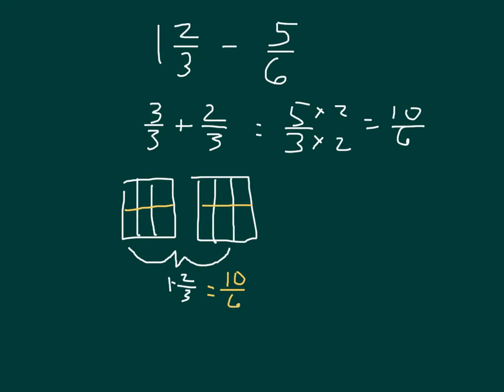So if we're subtracting 5 sixths from there, we'll go to our model first. And so we subtract 1, 2, 3, 4, and 5 sixths. That leaves 10 sixths minus 5 sixths equaling 5 sixths.